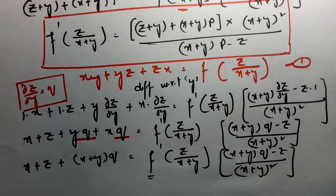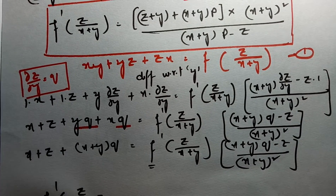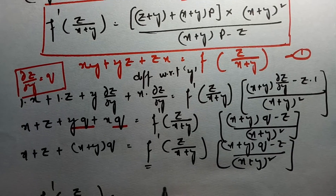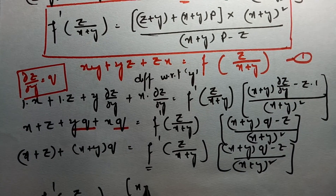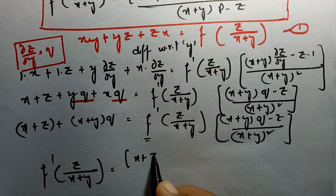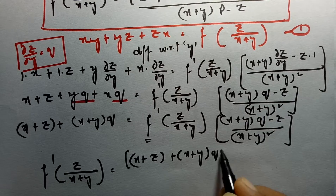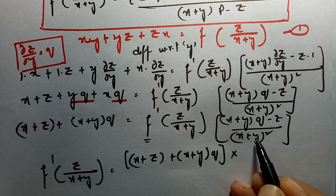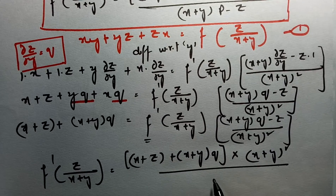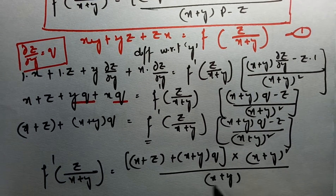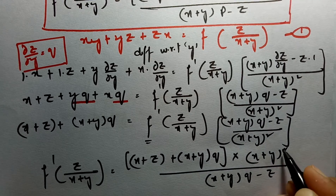Rearranging to isolate f'(z/(x+y)): f'(z/(x+y)) = [(x + z) + (x+y)q]·(x+y)² / [(x+y)q − z]. This is the result after differentiating with respect to y. I can write this as equation 3.